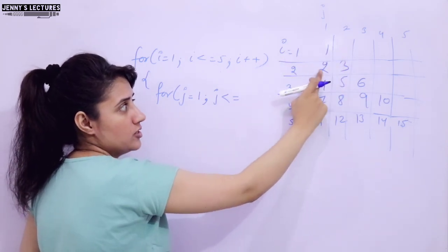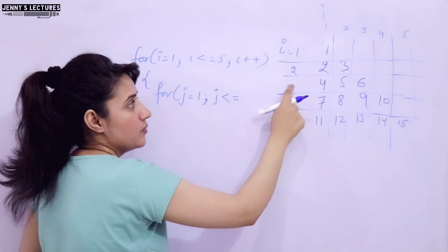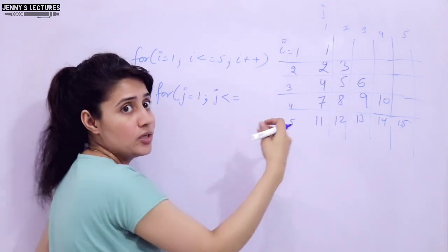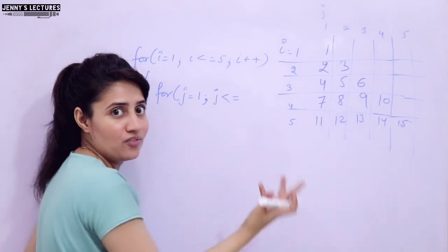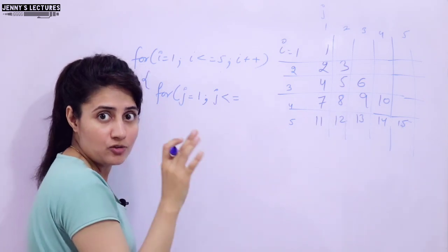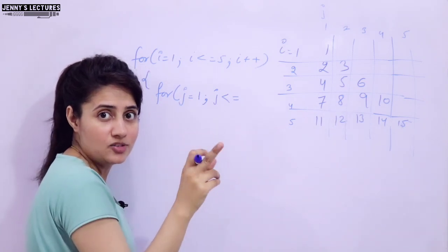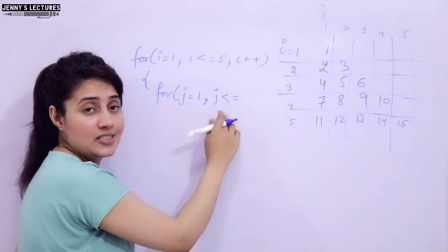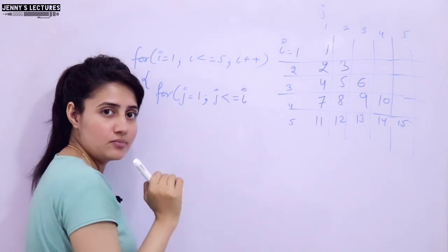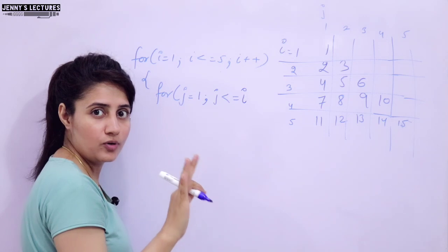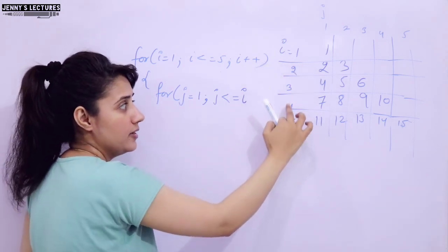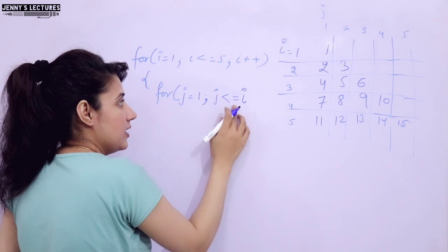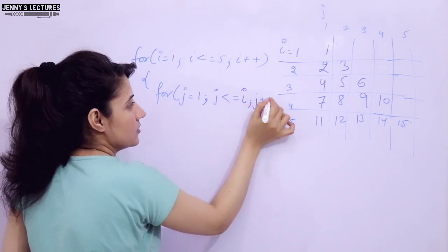When I value is 2, J is executing 2 times. When I value is 3, J is executing 3 times; 4 times; 5 times. So I hope you are able to relate I and J. We can put J less than equal to I. Whatever the value of I, J should be repeated that many times. So: J less than equal to I, and J plus plus.